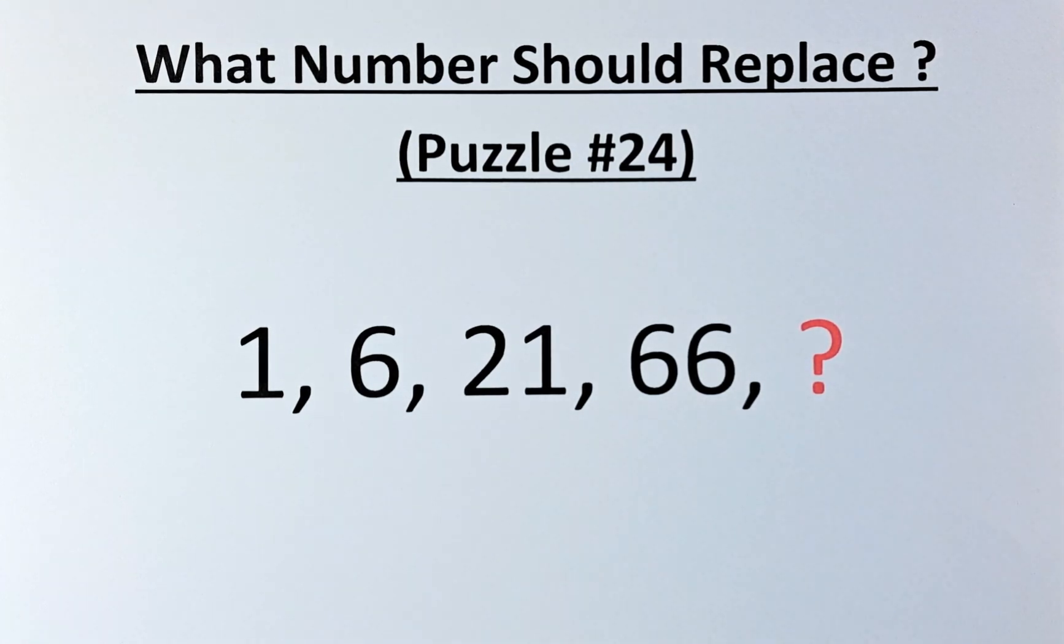Here is the solution to this puzzle. To get 1 to 6, 6 to 21, and 21 to 66, the only possible outcome is to multiply and add a number. That's what we're going to do.